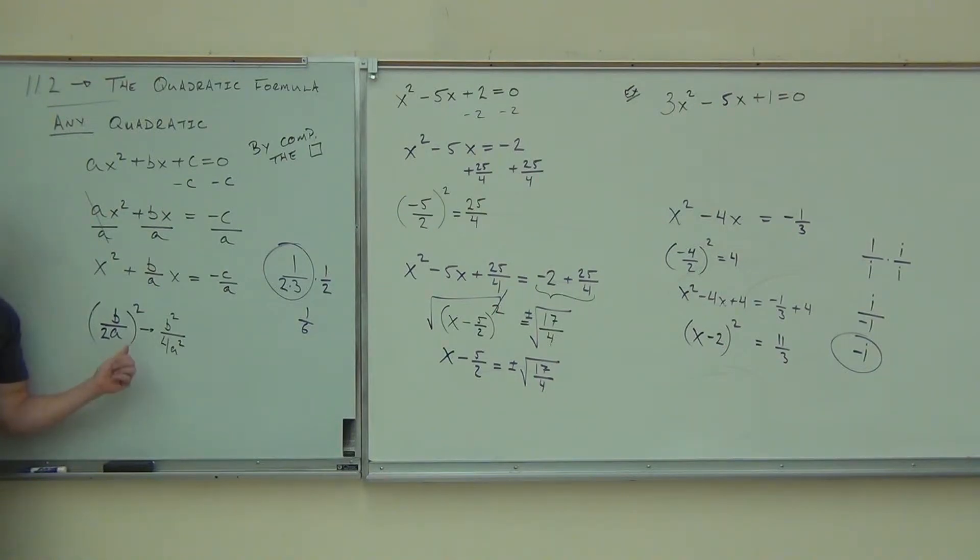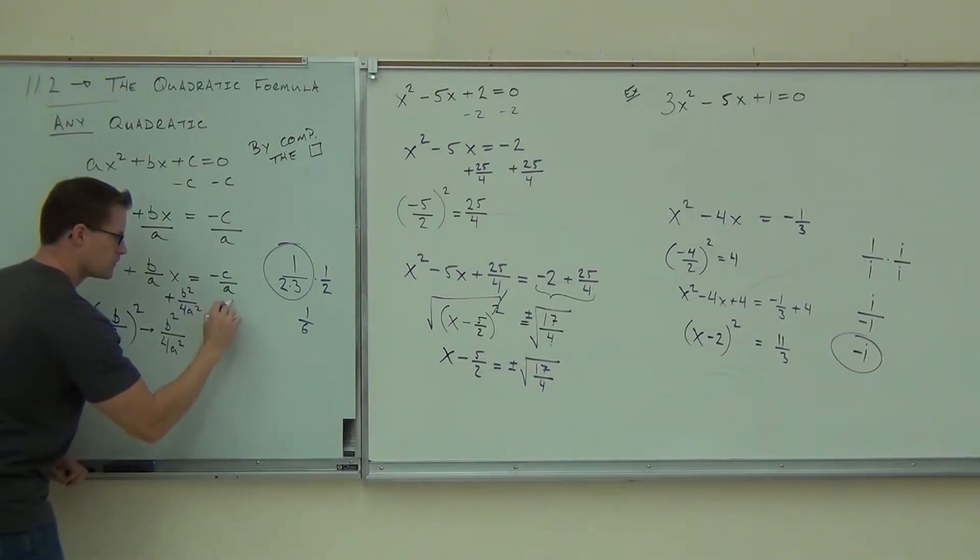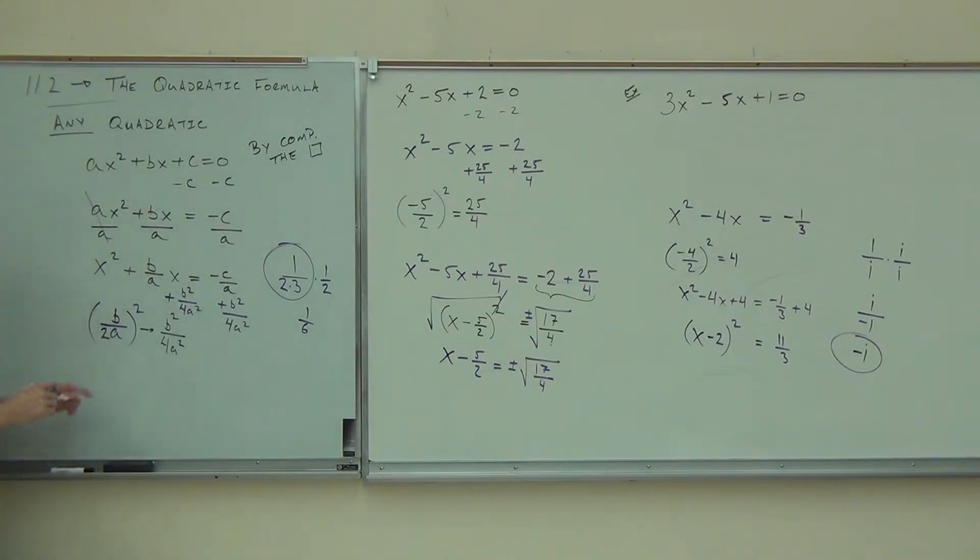Remember, this is the key step here. I've taken half of this, check. I've squareded it, check. I've added it to both sides. I'm going to add this to both sides. So I'm adding this, b squared over 4a squared, to both sides.